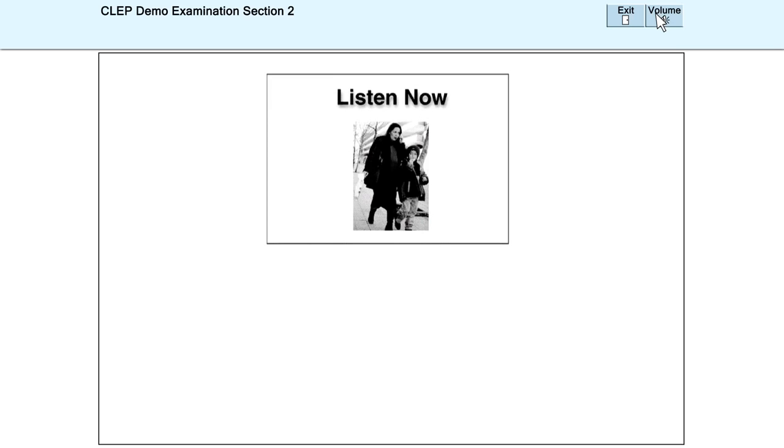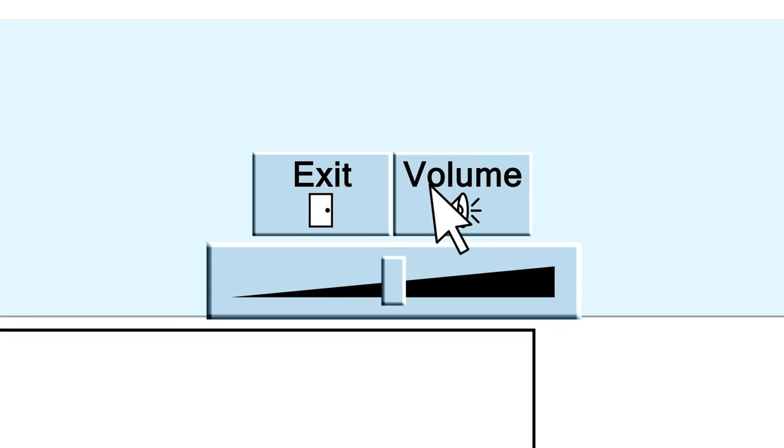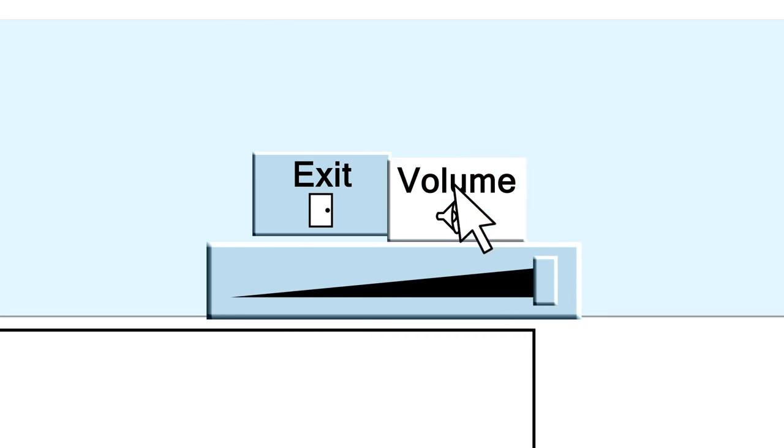On the French, German, and Spanish CLEP exams, the Volume tool will be part of the Testing Tools menu bar. Clicking on Volume brings up the Volume control. To change the Volume, move the Volume indicator to the left, or to the right. Click on Volume again to close the Volume control.